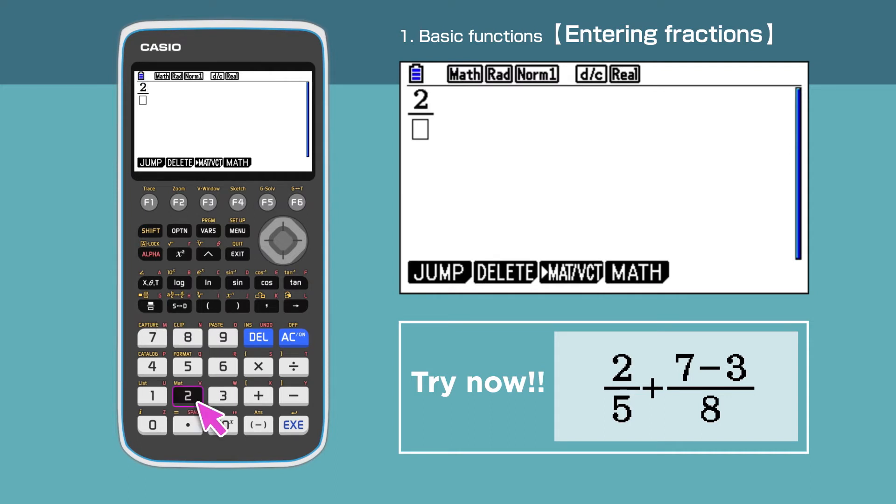Move the cursor next to the 2, then down so that we can enter the denominator. Enter 5. Now the denominator is 5 and the fraction is complete.